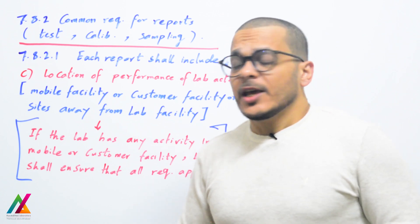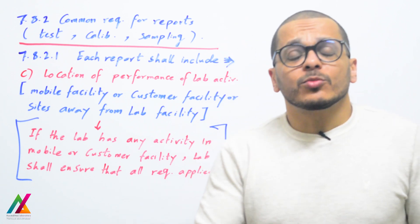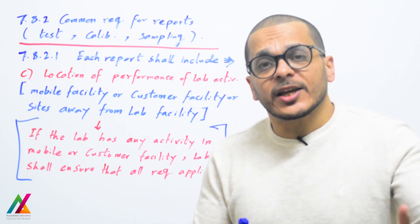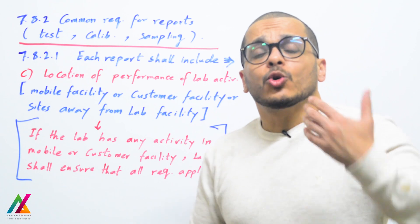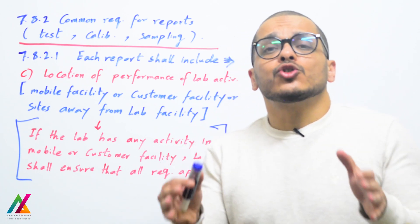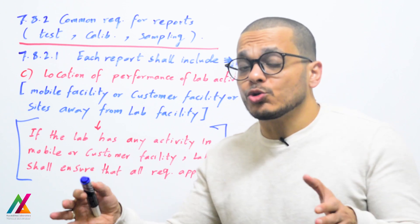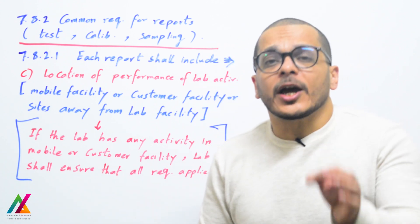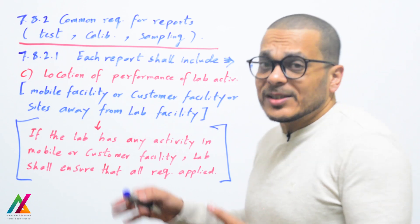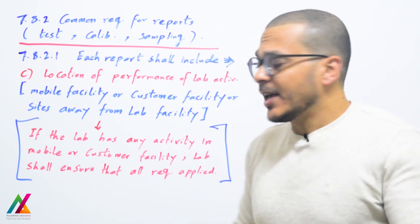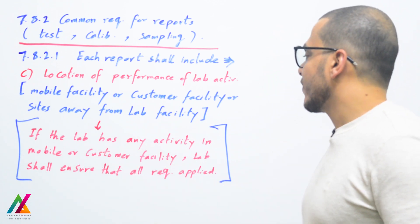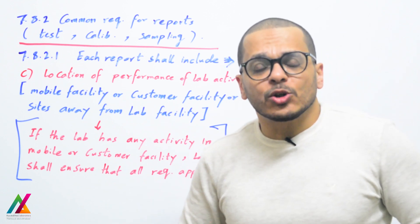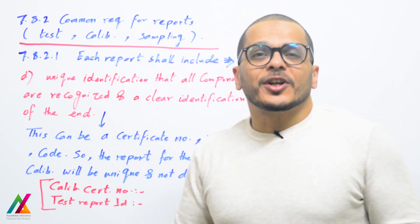The location of performance is very important to mention, whether it is a mobile facility, customer facility, or sites away from the lab's permanent facility. If you perform the lab activity inside the lab or outside in a customer facility, mobile facility, or sites away from the permanent facility, you shall ensure that all requirements of ISO 17025:2017 and other applicable guidelines are applied at that facility to ensure the validity of results.